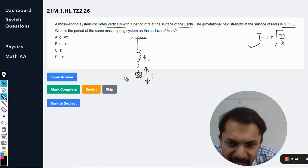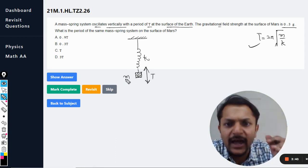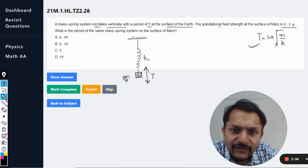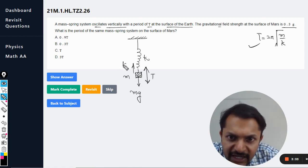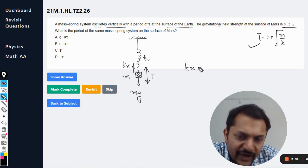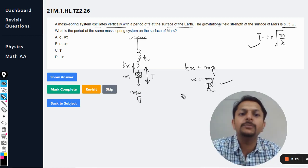Now you see, this is the spring constant k and this is the mass m. So what is actually happening when the spring is vertical? When the spring is vertical, there is one force which is acting like mg and the other force is kx. So from here, we find that kx equals mg. So x equals mg/k. So we are still not talking about the SHM.